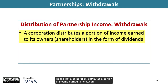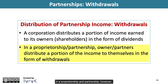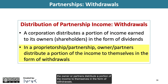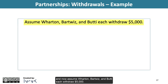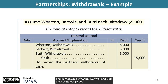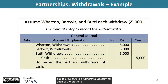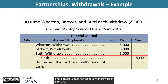Recall that a corporation distributes a portion of income earned to its owners, the shareholders, in the form of dividends. In a proprietorship and partnership, however, the owner or partners distribute a portion of the income to themselves in the form of withdrawals. For WBB Consulting, assume Wharton, Bartwiz, and Beauty each withdraw $5,000. The journal entry to record the withdrawal includes debits of $5,000 to a withdrawal account for each of the partners and a credit to cash for the total withdrawals of $15,000.